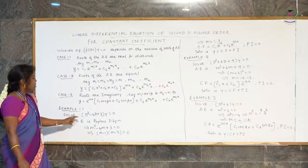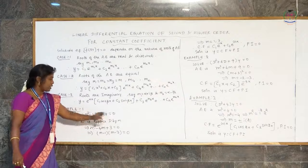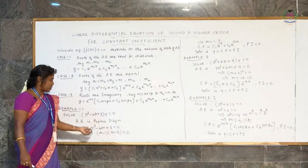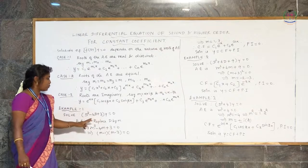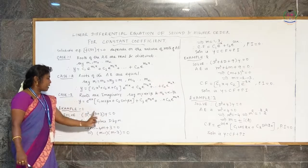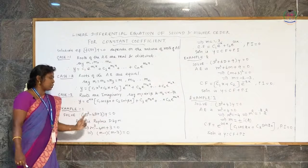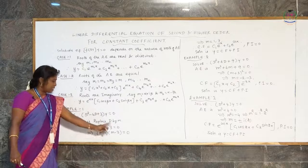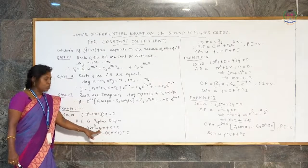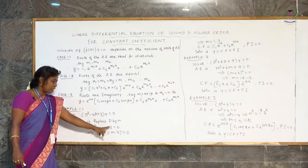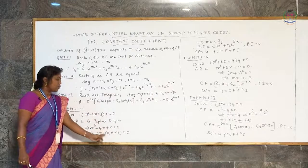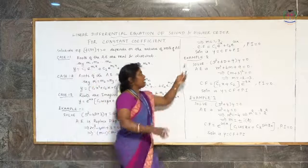Now we can see different problems. Example 1: solve (D² minus 4D plus 3)y equals 0. This is a linear ordinary differential equation. To find the auxiliary equation, replace D by m and equate to 0: m² minus 4m plus 3 equals 0. Here the product is 3 and sum is minus 4, so this factors as (m minus 1)(m minus 3) equals 0. Therefore m equals 1 and m equals 3.